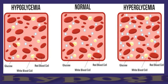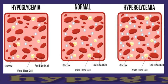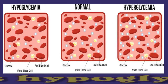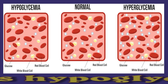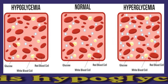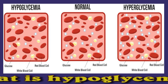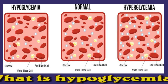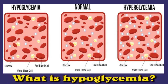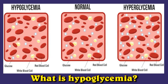Hypoglycemia occurs when blood sugar levels drop below 70 milligrams per deciliter. Severe hypoglycemia can be life-threatening if a person does not receive treatment. Treatments focus on returning blood sugar to safe levels. Blood sugar, or glucose, is the body's primary source of energy. When levels fall too low, the body does not have enough energy to function fully.